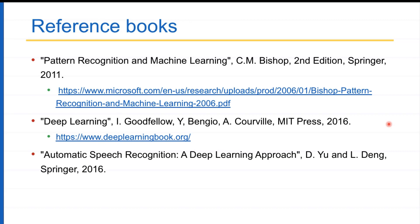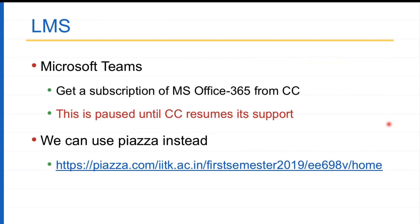Here are some reference books: PRML — Pattern Recognition and Machine Learning by C.M. Bishop, an older book from 2006 but very useful for basics, though it doesn't cover deep learning. For deep learning, we have the Deep Learning book by Goodfellow, Bengio, and others — open source and available online. We also have a book on Automatic Speech Recognition: Deep Learning Approach by Dong Yu and Deng. These are reference books, not textbooks — I'll specify small portions to read if needed, otherwise the course will be largely self-contained.